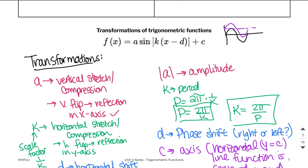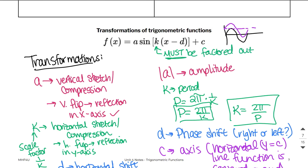This works for sine as the parent function, but it also works if we had cosine. One thing that is super important: the k must be factored out. Just like when we did our transformations, the k has to be factored out.